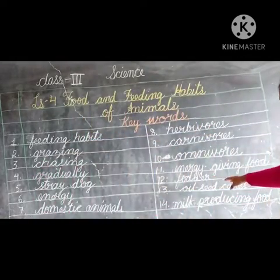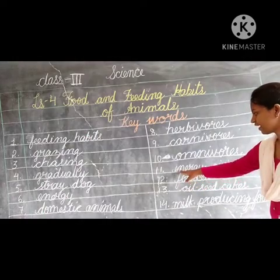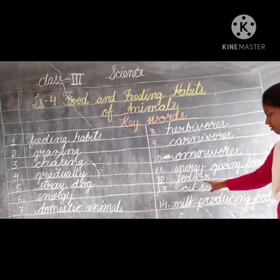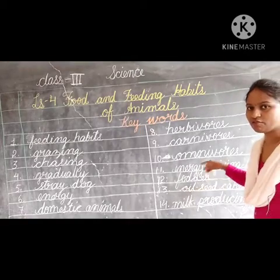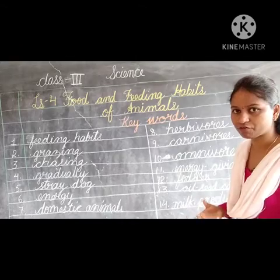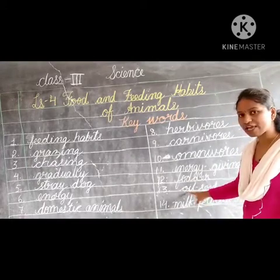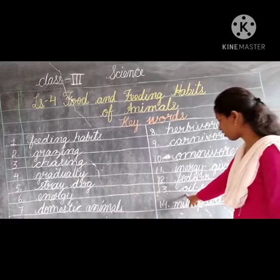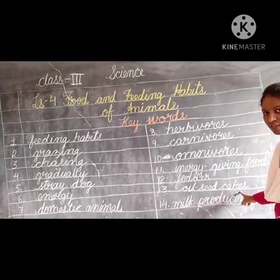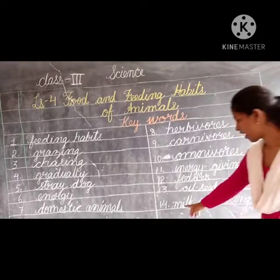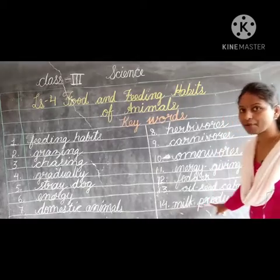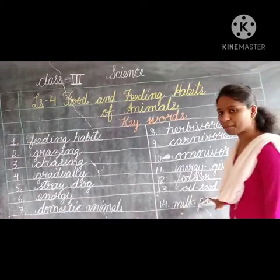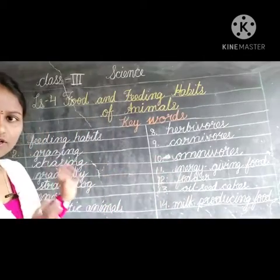Next, 'energy-giving food' - E-N-E-R-G-Y, G-I-V-I-N-G, F-O-O-D. Next, 'fodder' - F-O-D-D-E-R. Fodder is the food we give to animals. Next, 'oil seed cakes' - O-I-L, S-E-E-D, C-A-K-E-S. Next, 'milk producing food' - M-I-L-K, P-R-O-D-U-C-I-N-G, F-O-O-D. These are the words you have to learn.